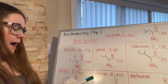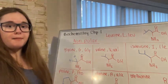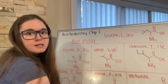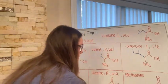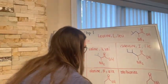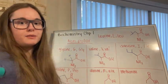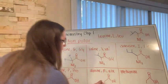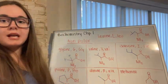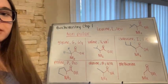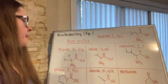Next we have alanine. Alanine is definitely one of the easier ones to remember — it just has a single line to represent the one carbon attached to it.